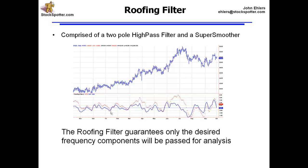So in all of my work I now make a roofing filter. It's comprised of a two-pole high-pass filter to get rid of spectral dilation effects, and a super smoother filter to get rid of quantization and aliasing noise. Between the two, I get rid of the high-frequency undesired components and the very low-frequency components. In other words, I have a roof over the band of frequencies I'm interested in, and I can put any other analysis underneath or behind that roof.